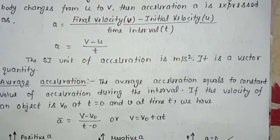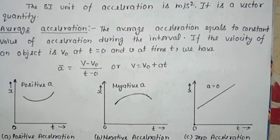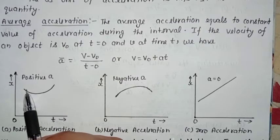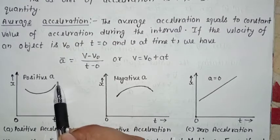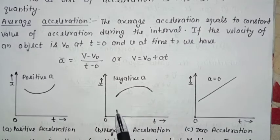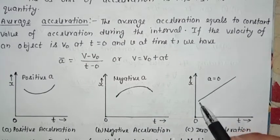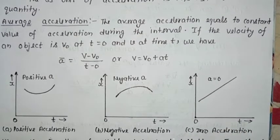V = V₀ + at — this is the first kinematic equation. इसके बाद मैंने कुछ graphs plot किए हैं जिसमें position और time के बीच में graph plot है। इसमें दर्शाया है कि positive acceleration graph कौन सा है, negative acceleration graph कौन सा है, और zero acceleration कब है। जहाँ graph ऊपर की ओर जा रहा है वहाँ positive acceleration होगा।